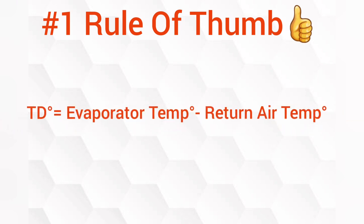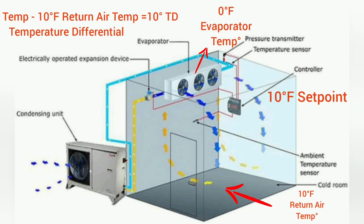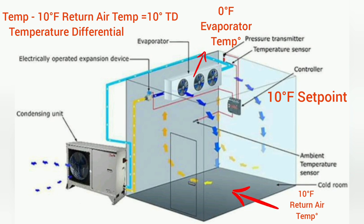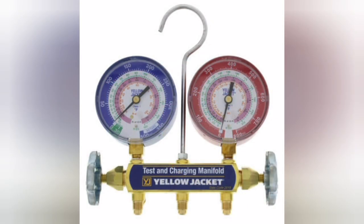TD is the temperature difference between the evaporator temperature and the return air that is being drawn across the evaporator coil. In this diagram, the yellow arrows are indicating the return air entering behind the evaporator coil inside of a walk-in box. In refrigeration, most walk-in coolers and walk-in freezers are designed with a 10 degree TD.